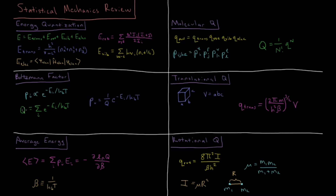The partition function is the sum of the Boltzmann factors for all possible states of a given molecule. We sum over every possible value of every quantum number, and summing up those Boltzmann factors gives us the partition function, which tells us every thermodynamic property of a given system if we have it exactly. The probability is then the inverse of the partition function times the Boltzmann factor for that state.